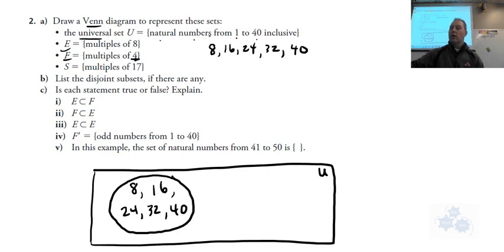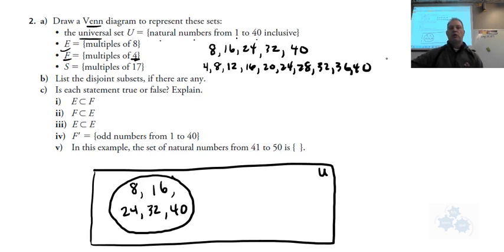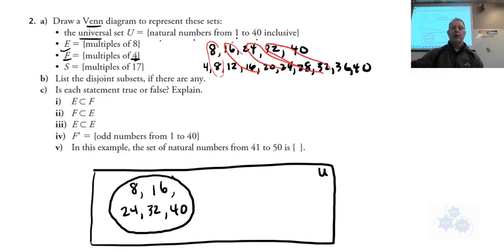F is multiples of 4. I would suggest you list them: 4, 8, 12, 16, and so on - that's 4 times 1, 4 times 2, 4 times 3, 4 times 4, all the way up to 40. Now when you want to make the Venn diagram, what I notice is that we have some overlap here - there are some elements that are in both sets. So I'm going to do F in a different color and I'm going to have to overlap a little bit.